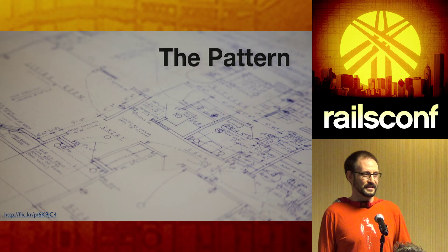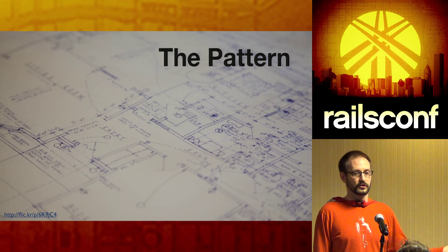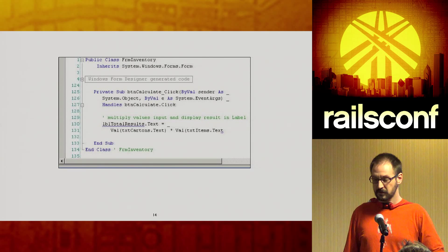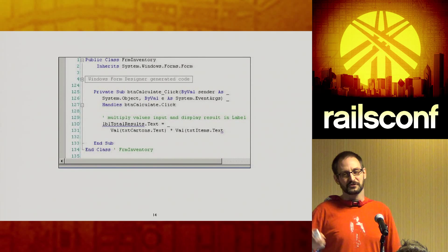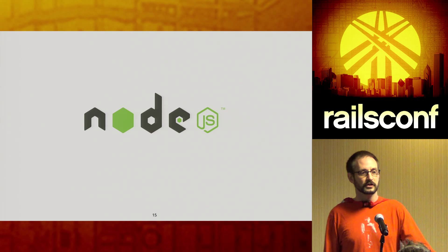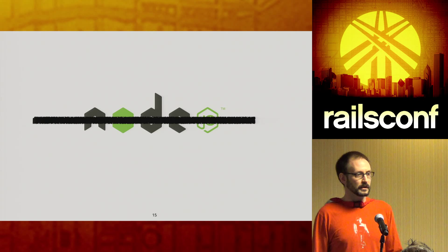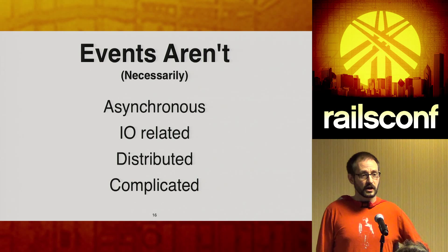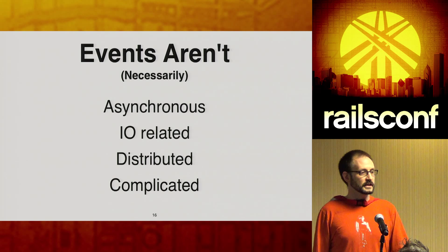When I say events, there are lots of different things people think of. Some folks thought this was going to be about EventMachine — it's not. What sorts of things pop to mind? Asynchronous, ActiveSupport, Visual Basic event handlers? A lot of people probably think Node, think asynchronous callbacks. But that's not necessarily the core of the type of event I'm going to describe here. These events are not necessarily asynchronous. They're not necessarily about I/O or distributing things. They're just a basic pattern to decouple pieces of your application.